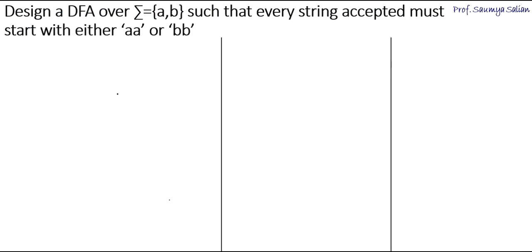Given question: design a DFA over the alphabet set {A, B} such that every string accepted must start with either AA or BB.